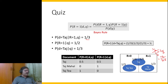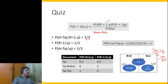The probability of r=1 is 1/2 since the diagram is symmetrical, and the probability that d is Taj is 1/3 since all documents have equal probability. When we put all these things together using Bayes rule, we get the posterior probability — the probability of relevance — which is 1/2.